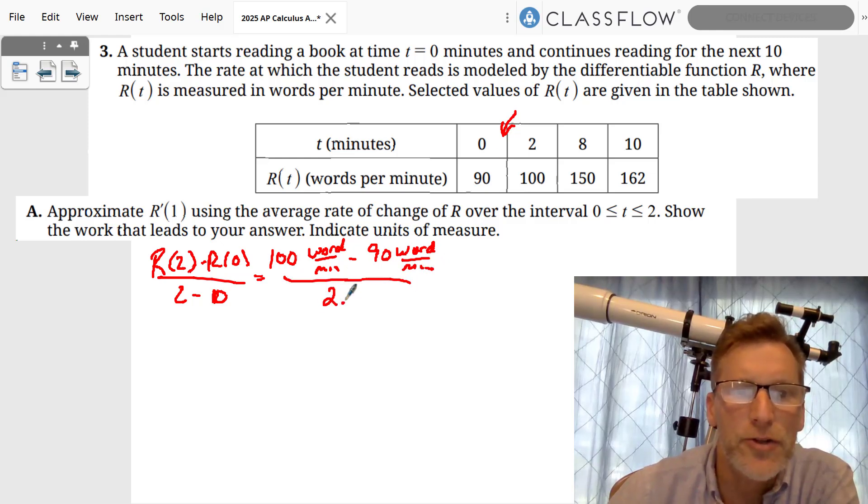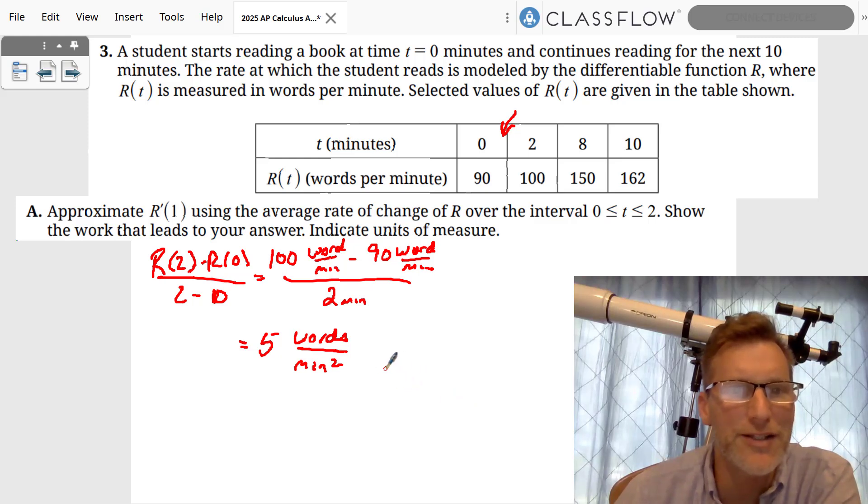Think about the units. We have words per minute minus 90 words per minute over how many minutes? Two minutes. So 100 minus 90 is 10, 10 divided by 2 is 5, and so that is 5.